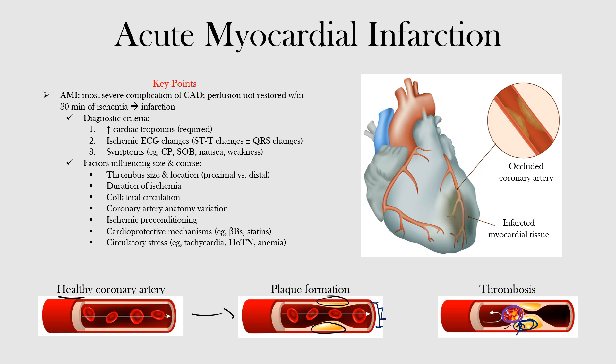When the artery is even partially occluded, increased demand cannot be met with adequate supply to the downstream tissue. If oxygen delivery is not restored within 30 minutes, infarction — necrotic tissue of the myocardium — will occur. That is a simple overview of how an acute myocardial infarction comes about.